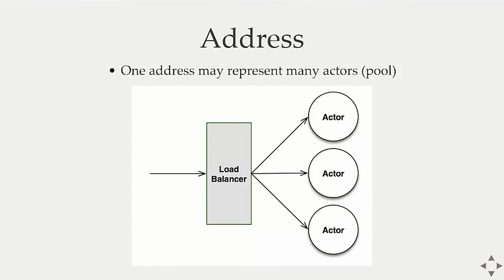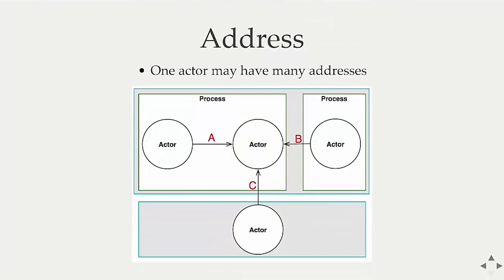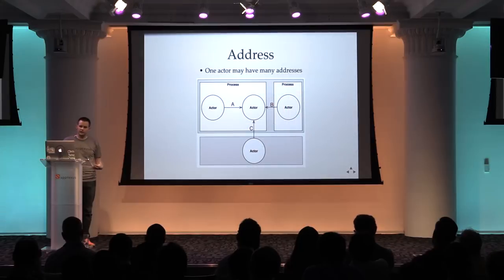One address can represent many actors — like a load balancer with multiple actors behind it. Similarly, one actor can have many addresses: an actor in the same process, different process, and different machine can all be addressed differently but point to the same actor.